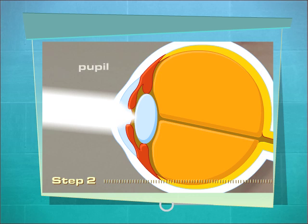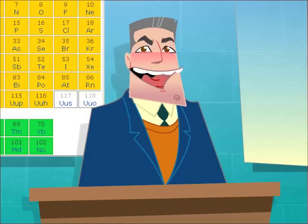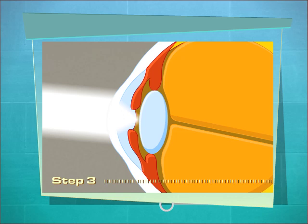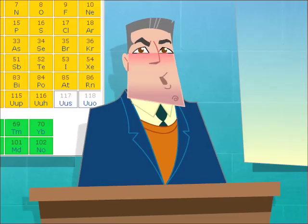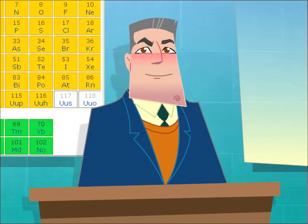Next, the light crosses the watery compartment and passes through the pupil. From there, it enters the adjustable lens, a transparent structure containing highly crystalline proteins. The lens then refracts the light.